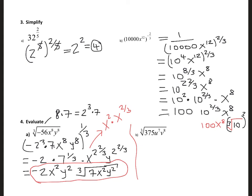Our next example is the cube root of 375u^7v^8. Now 375 is the same as 125 times 5, and 125 is 5 cubed. So I rewrite as 5 cubed times 3 times u to power 7 times v to power 8, all raised to 1/3. Then 5 cubed times 1/3 becomes just 5, and 3 times 1/3 remains as 3 to the 1/3.